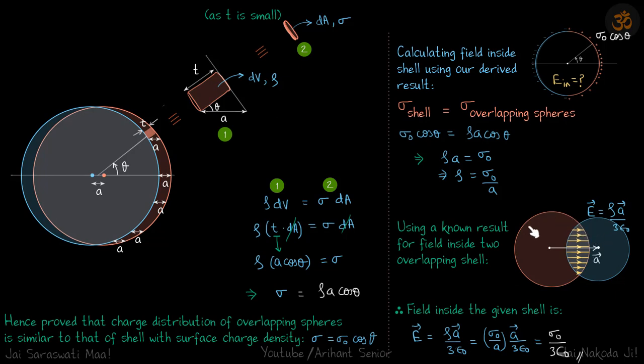Here also, in this case we have overlapping spheres. So field inside this sphere can be given as rho A by 3 epsilon. Or rho we can write as sigma not by A times A vector by 3 epsilon. A vector by A will just be unit vector. So its magnitude becomes sigma not by 3 epsilon, which is our answer.